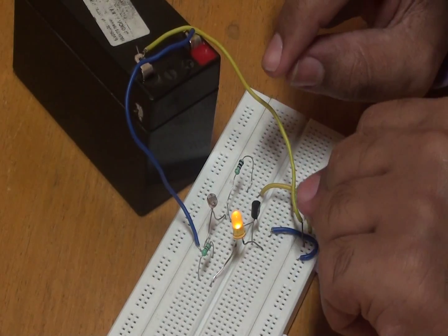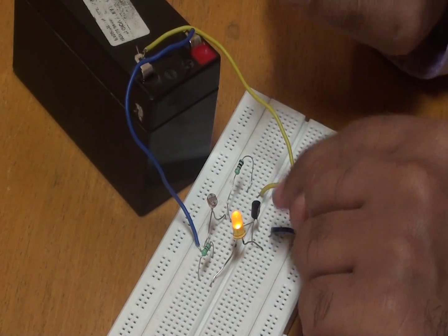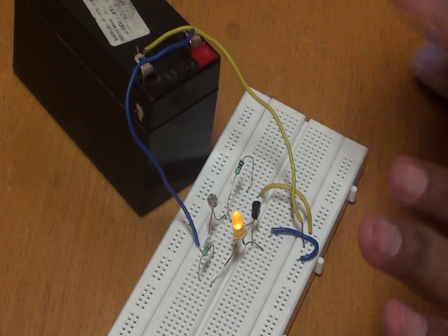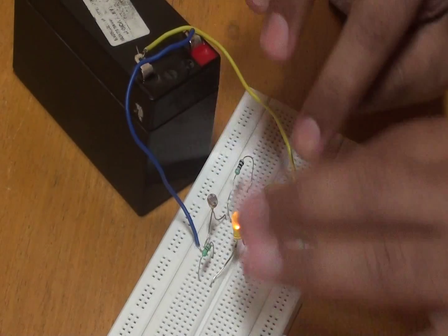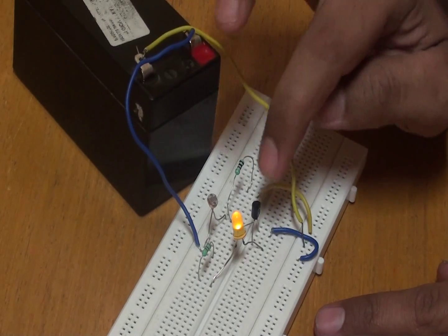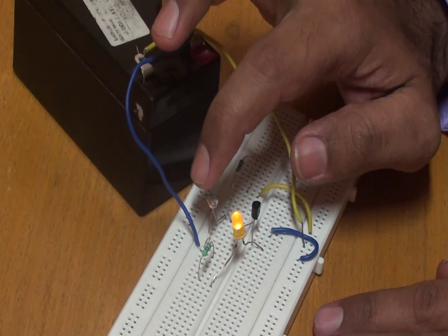So now as I have told this BC547 how it works. So once the power supply is given, it acts as an open switch, I mean a close switch. It allows the passage of current to flow through the base from the collector. And from that you can give to the photo resistor.